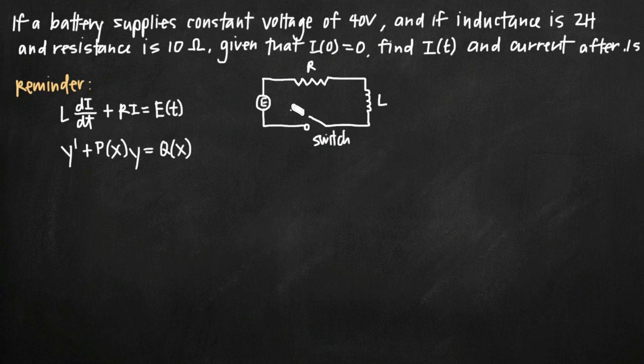Now it's important to note that in a circuit like this, E models voltage, so this here is going to be 40 volts, R models resistance, so this is going to be 10 ohms, and L models inductance, so this is going to be 2 henrys.